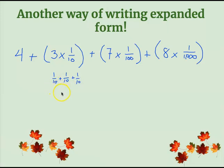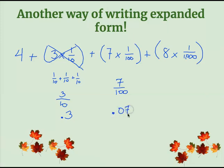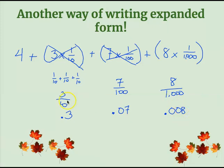We can write three tenths as a fraction or in decimals as 0.3, which is three tenths. Now, seven times one hundredth would be seven hundredths, or in decimals we write 0.07 — since the number seven ends in the hundredths column, we say seven hundredths. Over here we have eight thousandths — instead of writing eight tiny one-thousandths, we just write eight thousandths. In decimals, that's 0.008, because the eight needs to end in the thousandths column.